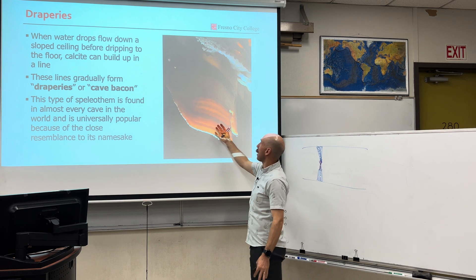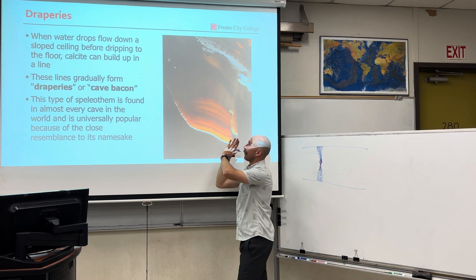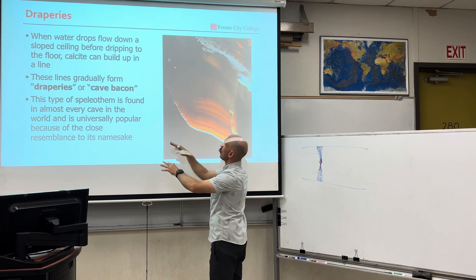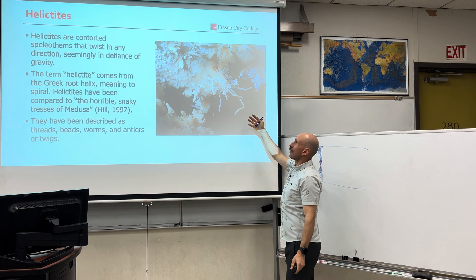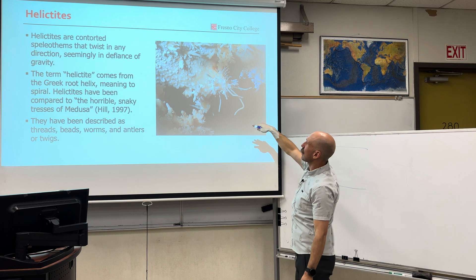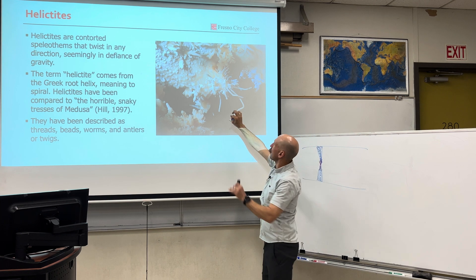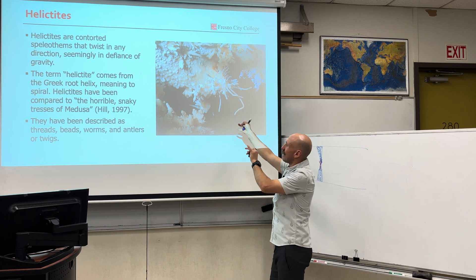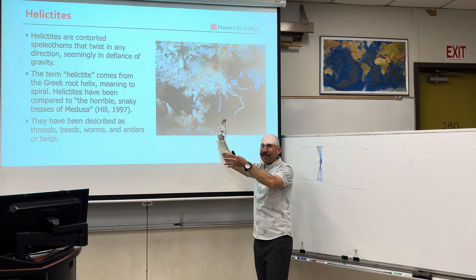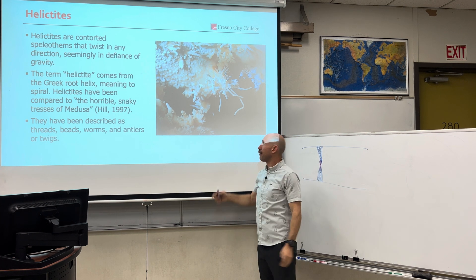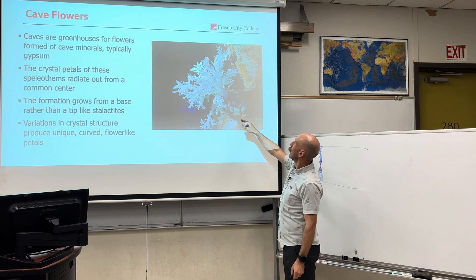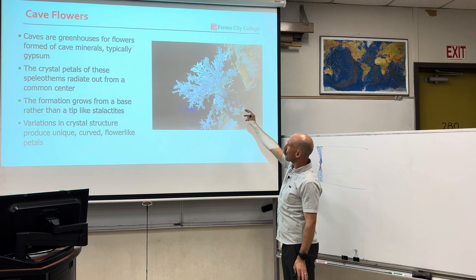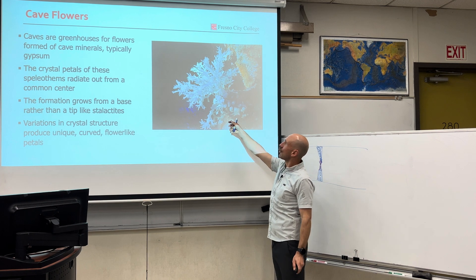Draperies, also known as cave bacon, are linear features that kind of drape down, hanging from the ceiling. We've got helictites — little features that twist, really cool because they seem to go against the forces of gravity. Unique cave features. And cave flowers — crystal petals that are growing out of a common center.